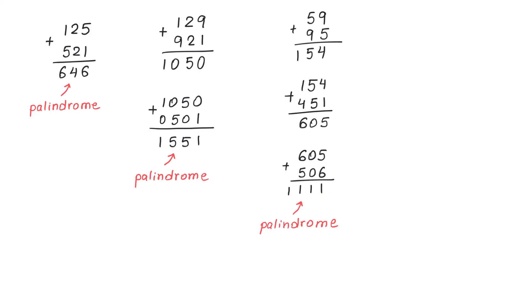So while some numbers produce palindromes quickly, with other numbers, the process needs to be repeated multiple times. And with some of the numbers, the mathematicians could not find a palindrome even after thousands and thousands of steps.